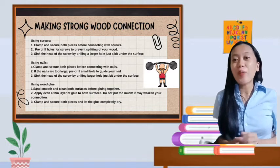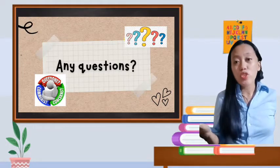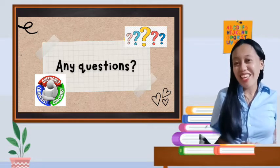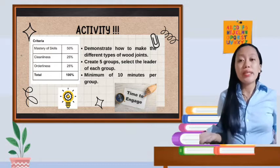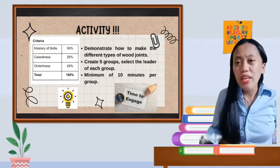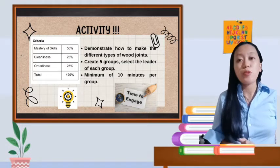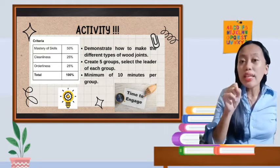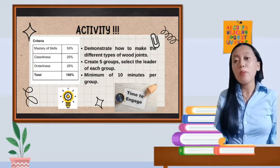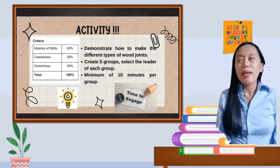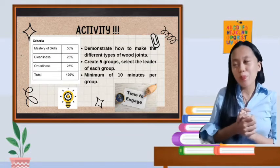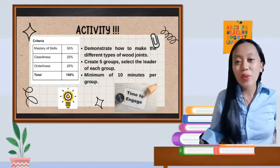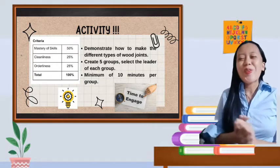Do you understand our lesson for today? Or do you have any questions before we proceed to our activities? For our activity, you will demonstrate how to make the different types of wood joints. You can create five groups and select one leader of each group. You will demonstrate in front of the class at least 10 minutes per group. Are we clear? Do you have any questions or concerns?